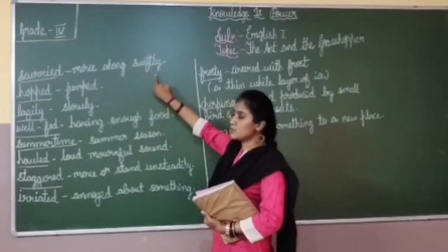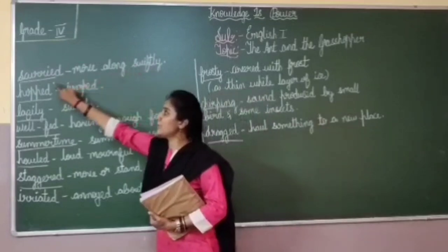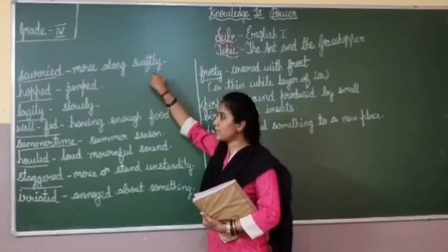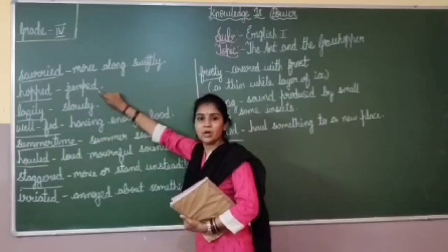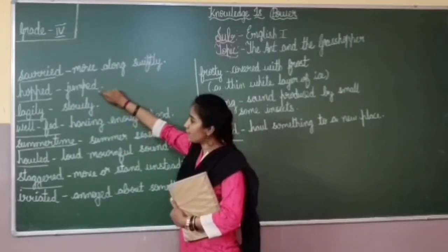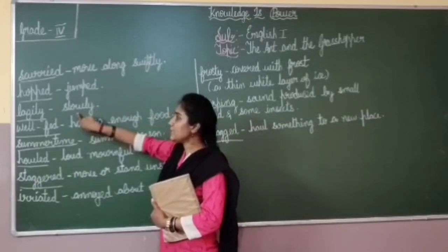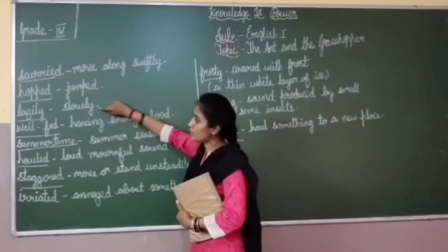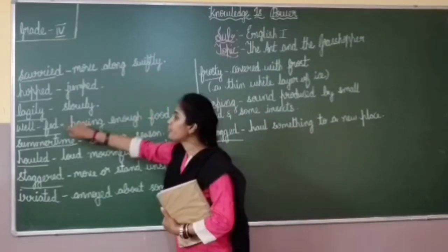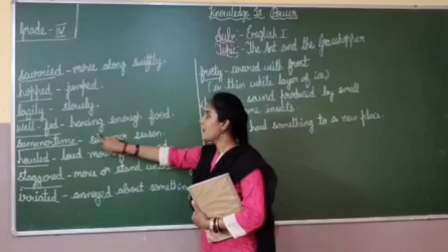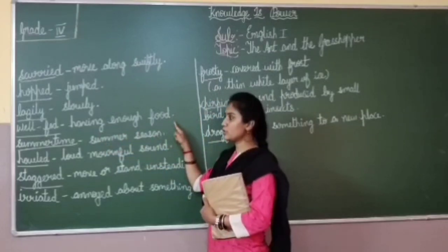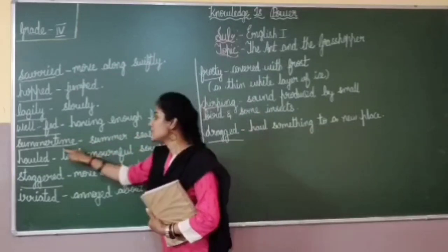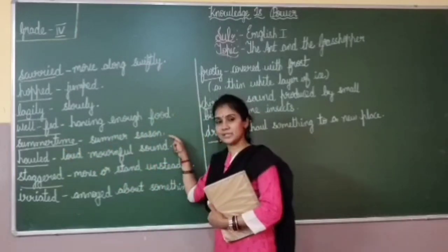Scurry means move along swiftly. Hop means jump. Lazily means slowly. Well fed means having enough food. Summertime means summer season.